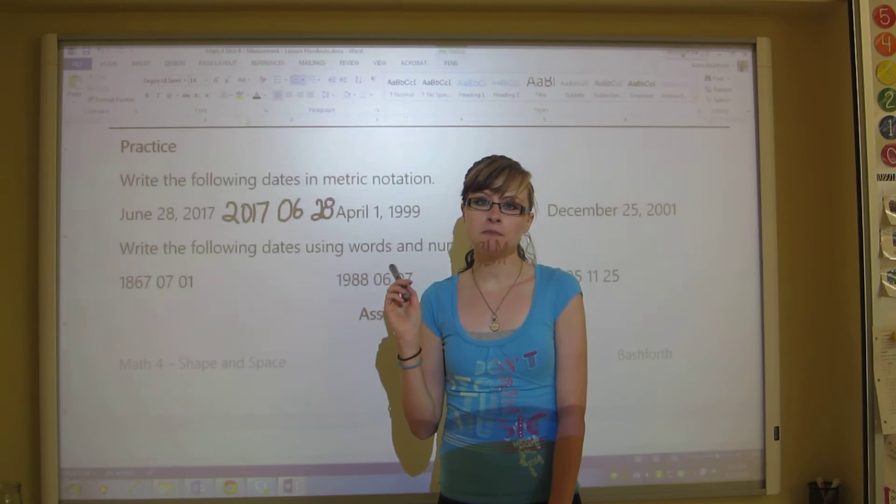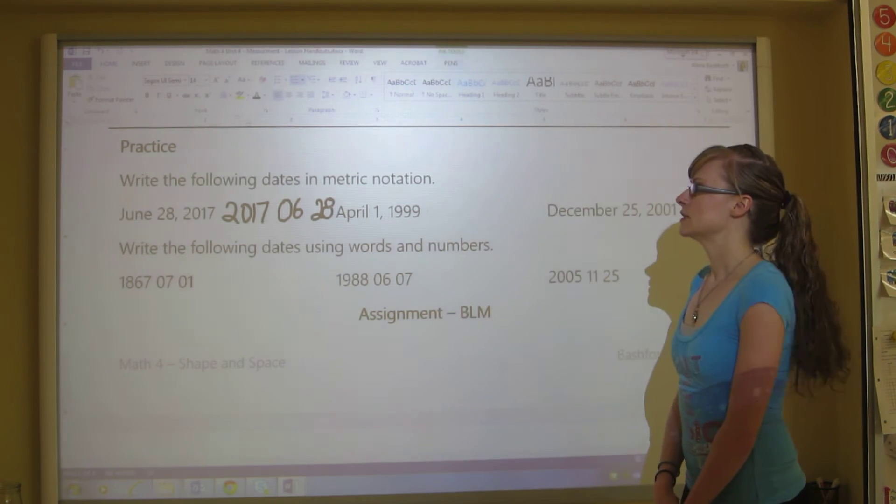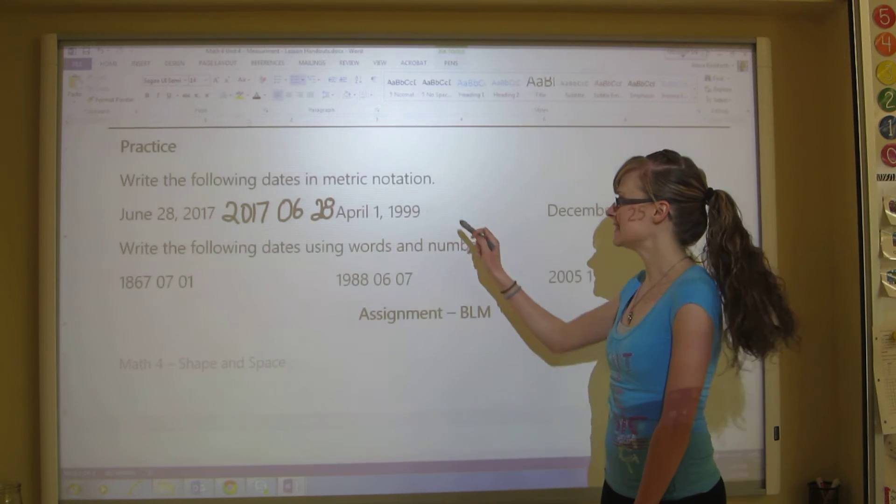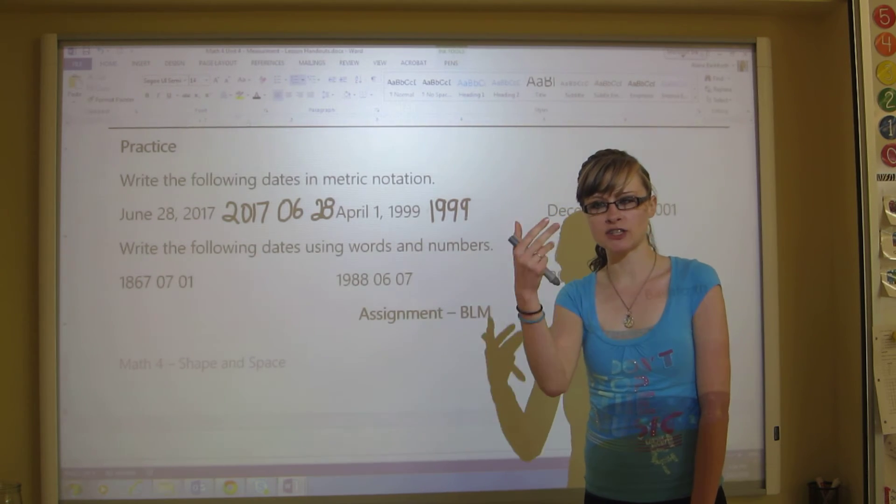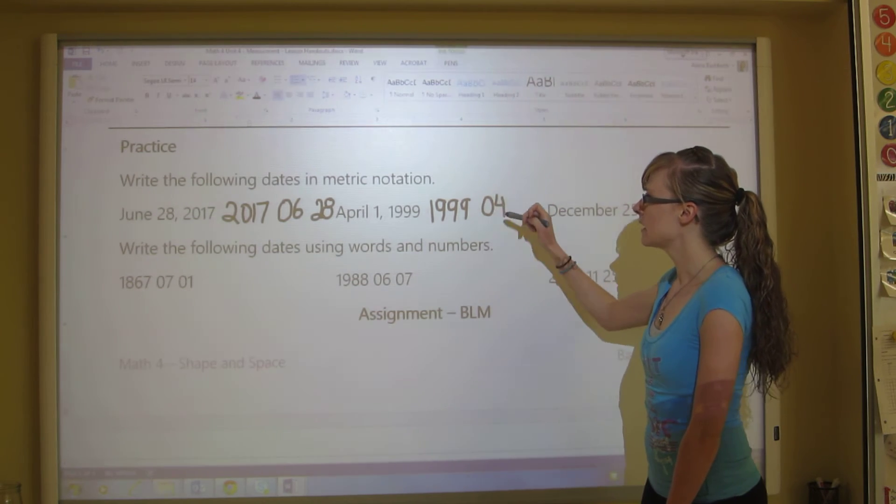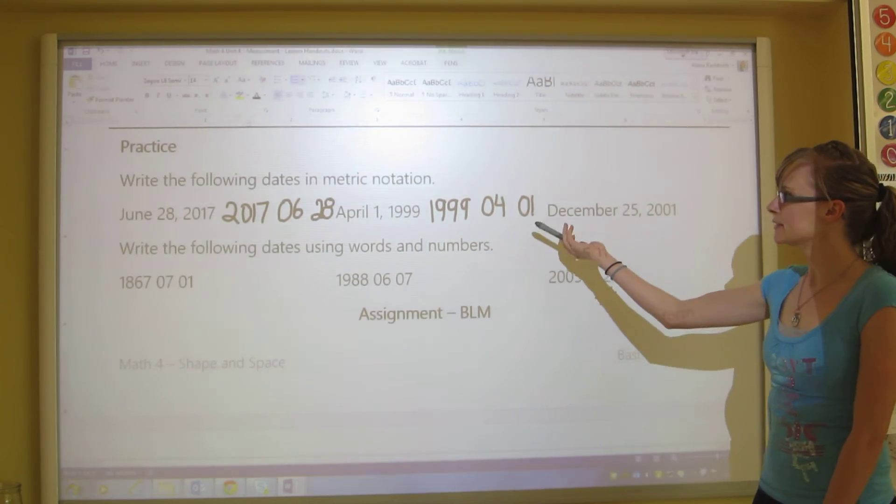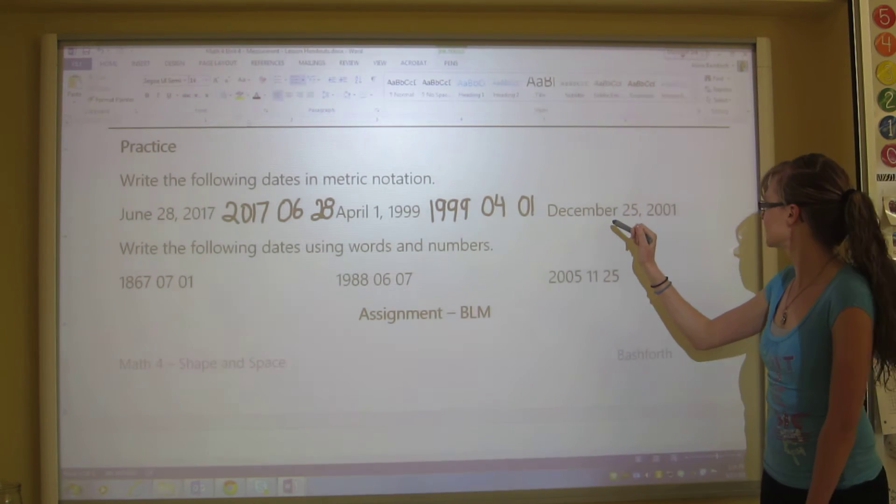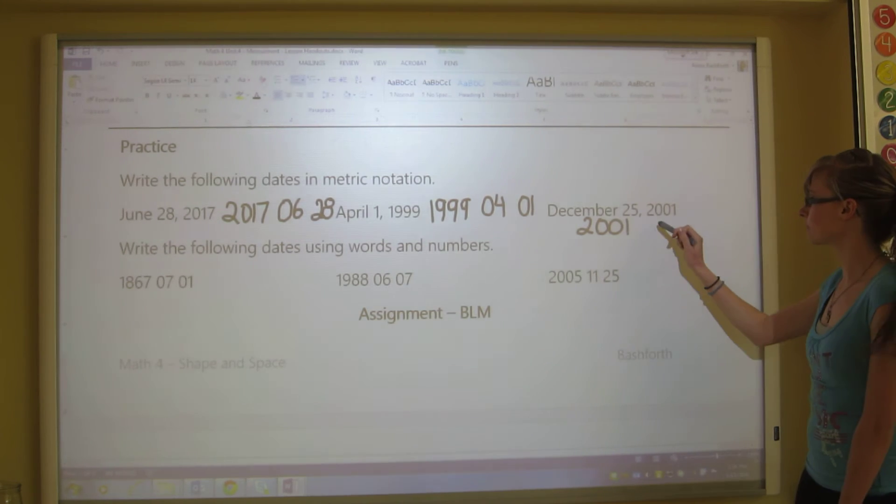Now, please pause the video and try the other two and then play again once you're finished. So you should have this completed already, but let's do it together. So we've got April 1st, 1999. So we've got 1999 goes first and then April is January, February, March, April. That's the fourth month. So we would write zero four and then it's the first day. April fool's day of 1999. And for December 25th, 2001, we would write 2001, December is the 12th month and we've got the 25th day.